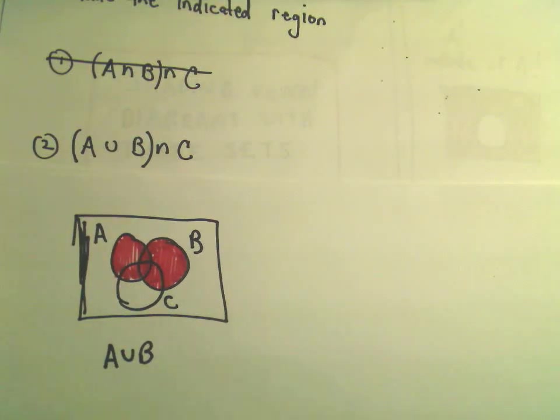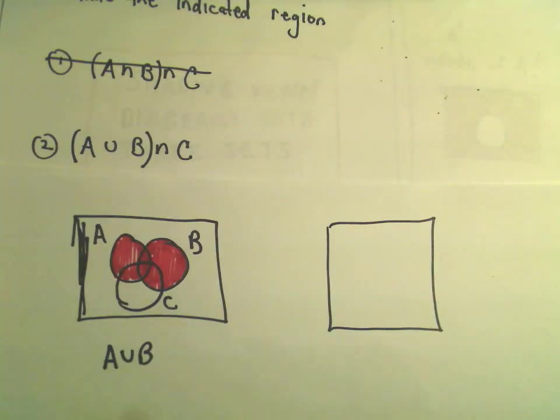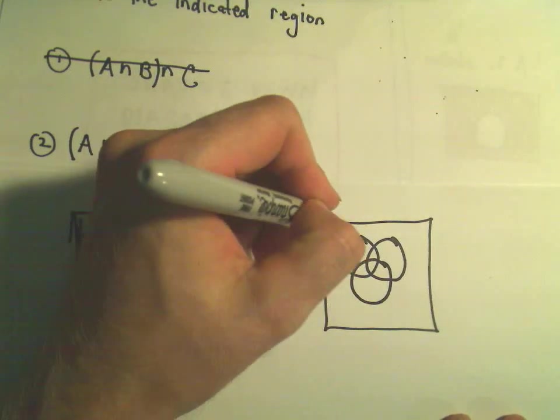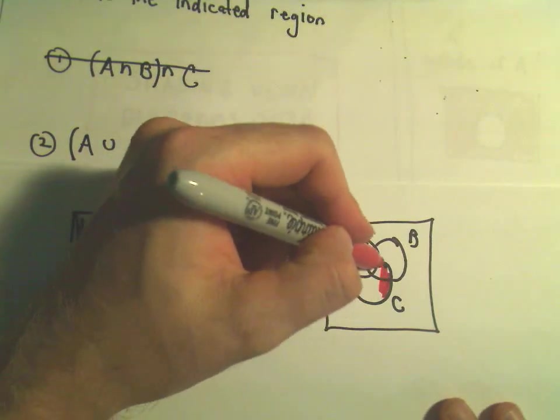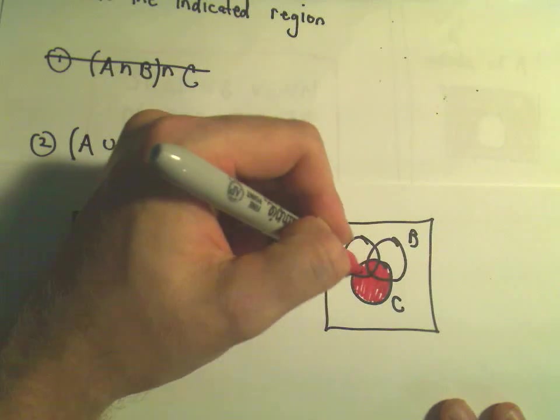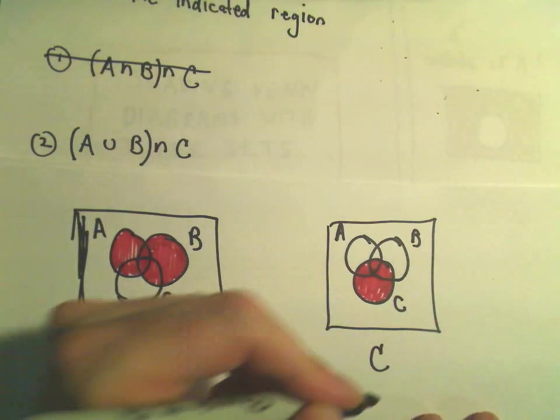Okay, and likewise, if we think about just simply shading in the set C, that's going to be like in our other example. So A, B, C. If we shade in everything in circle C, we'll just get that region as our shaded region. So there's our set C.